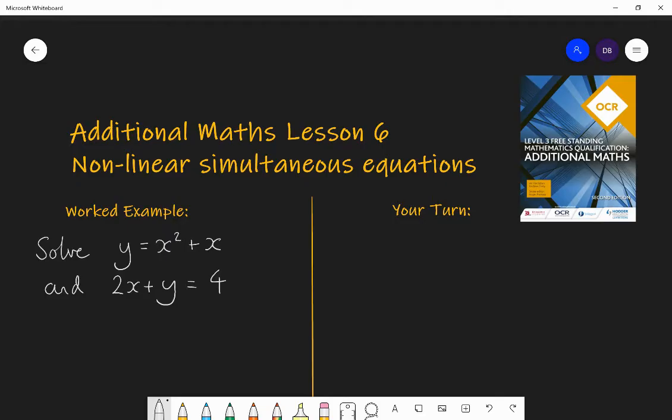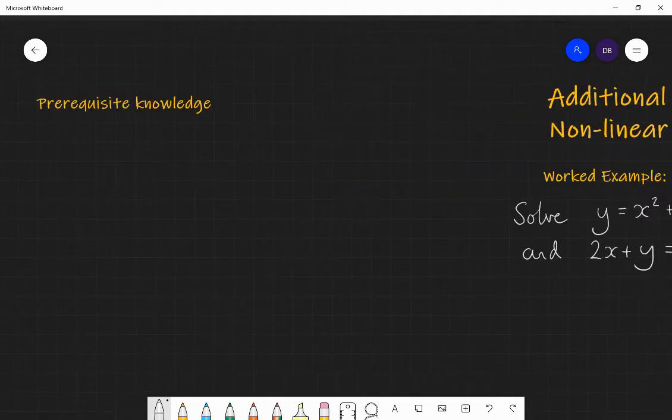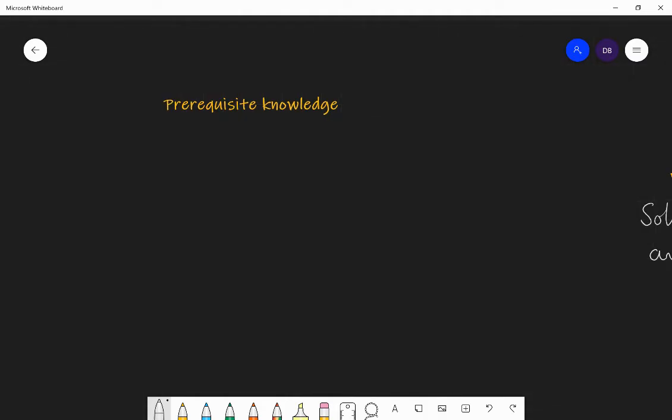I expect you to already understand how to solve simultaneous equations, things you've done at GCSE level, such as finding the solutions to these two simultaneous equations: 3x plus 4y equals 12 and 2x minus y equals 5. Something like that, where the solution is asking for the value of x and the value of y which works in both equations.